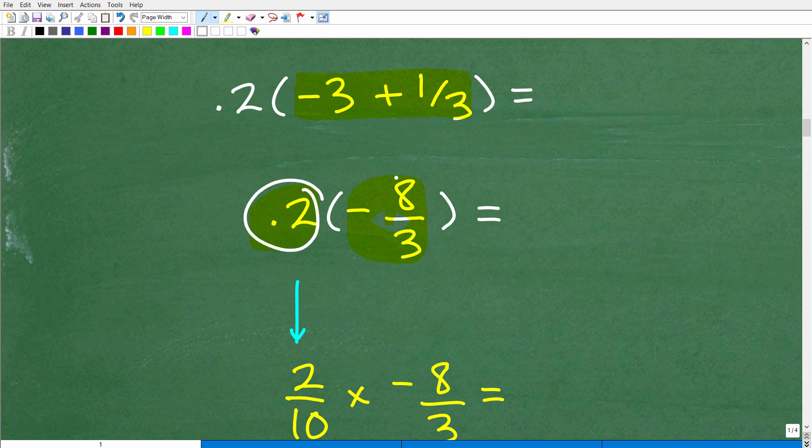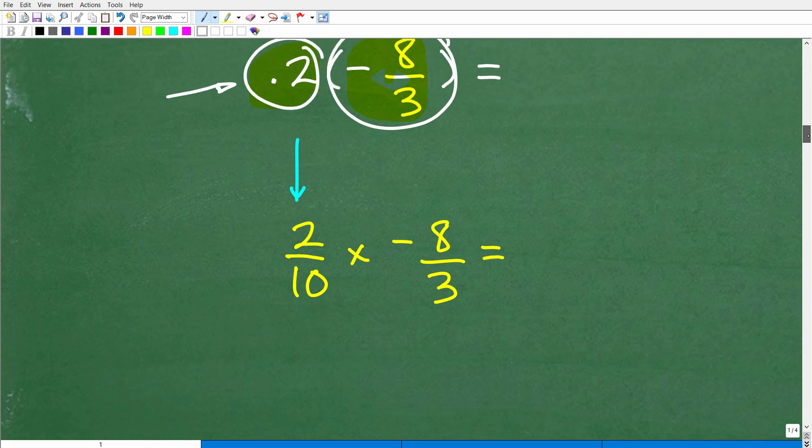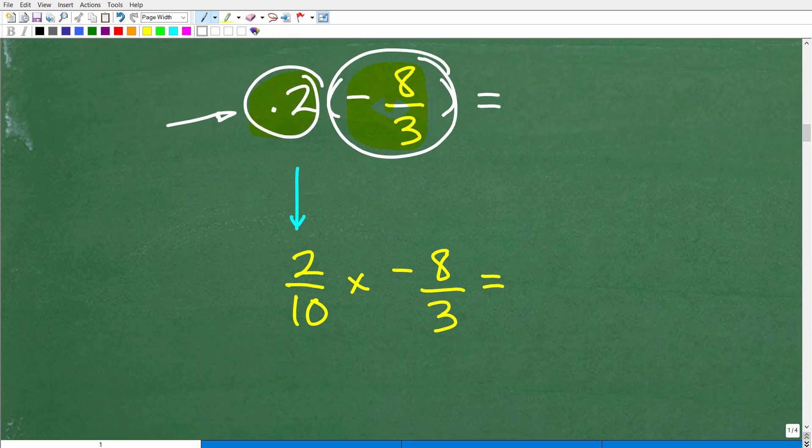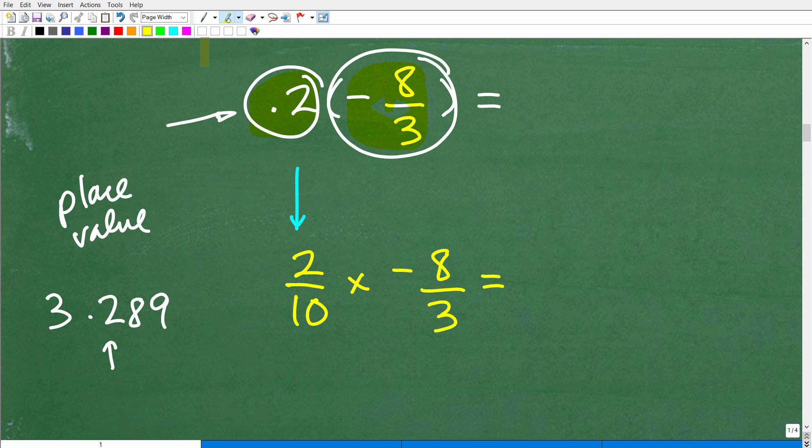But here we're working with a decimal, and here is a fraction. So let's go ahead and convert this decimal into a fraction. So 0.2, another way of saying 0.2 is 2 tenths. And this goes to your understanding of place value. So if I have like 3.289, this place right here in the decimal—we're talking about values to the right of the decimal point—this is the tenths place. This is the hundredths. This is the thousandths, et cetera. So if you're down to just 0.2, you would say this as 2 tenths. Okay, so the way you want to convert a decimal to a fraction is to say it in terms of its place value. So 2 tenths or 2 over 10. So now we just have to figure out what 2 over 10 times negative 8 over 3 is.